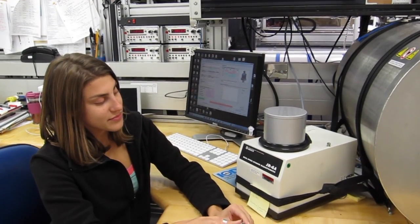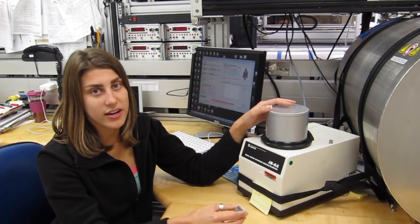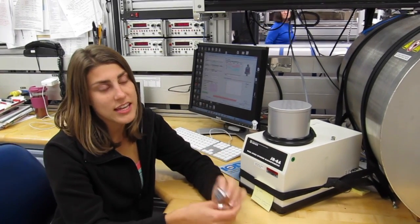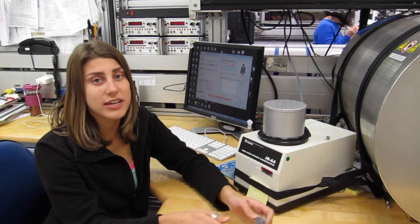First we measure them on the magnetometer, and this tells us the natural magnetism that it reports. Sometimes this has been overprinted or it picks up a new magnetization from the drilling process.